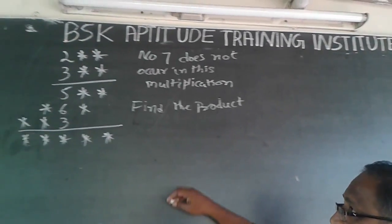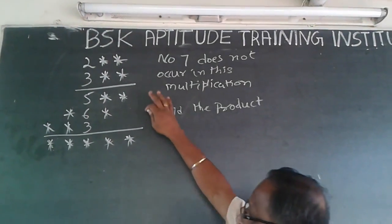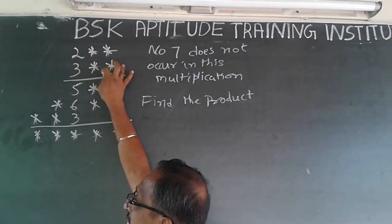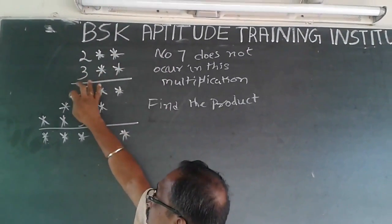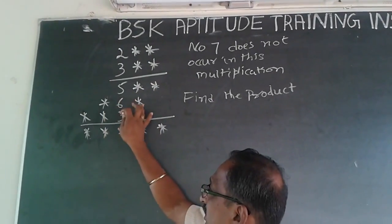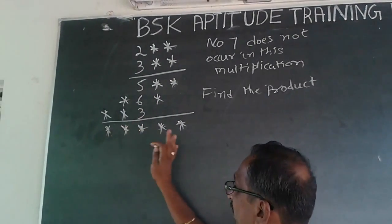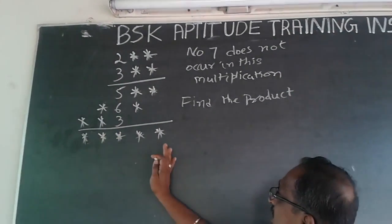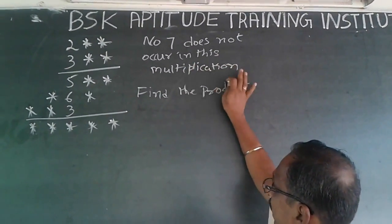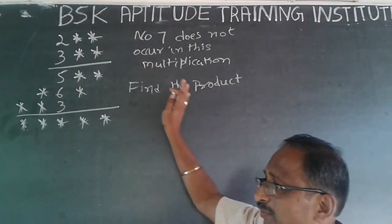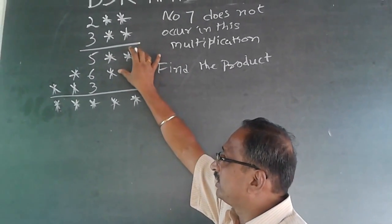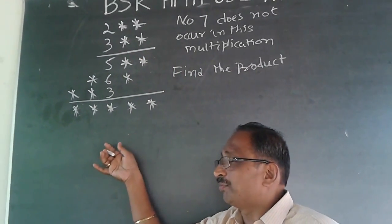The question I'm going to handle now is a puzzle type of thing — a simple one. It is 2-star-star into 3-star-star. The first line will be 5-star-star, then star-6-star, then star-star-3, and 5 stars. What is given is that the number 7 does not occur in this multiplication. Find the product. This is a multiplication of a 3-digit number by a 3-digit number, giving a 5-digit number.